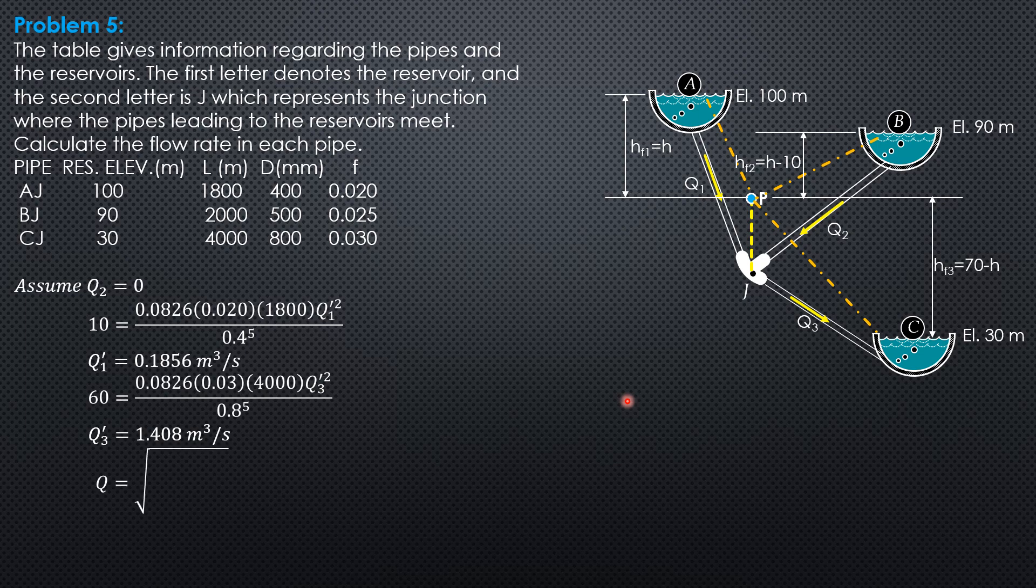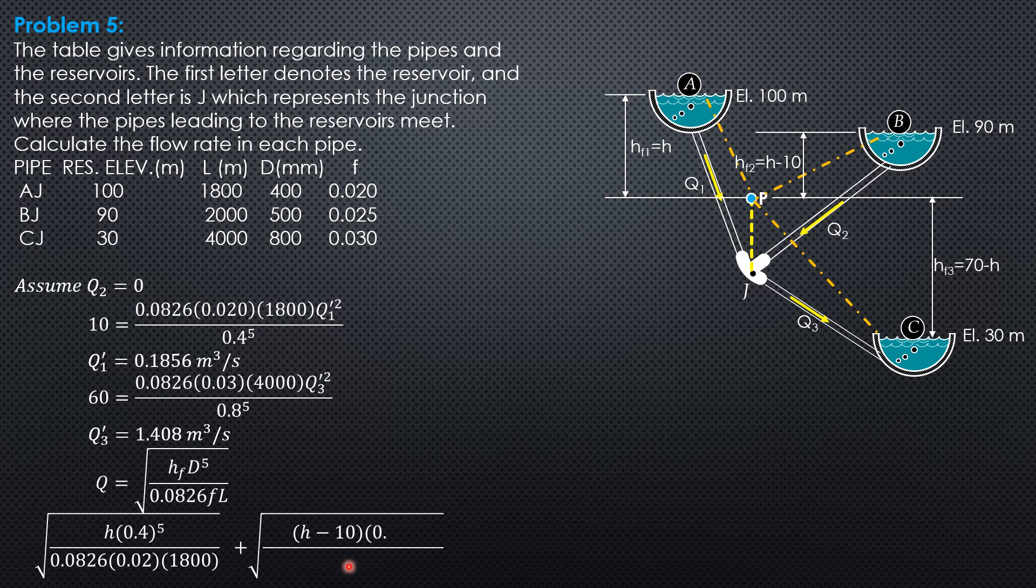So discharge formula: Q1 plus Q2 equals square root of HF, diameter to the fifth over square root of 0.0826 friction factor length. And the equation is Q1 plus Q2 equals Q3. So Q1 is square root of H times 0.4 to the fifth over 0.0826 friction factor 0.02 length 1,800, plus Q2 square root of quantity H minus 10 times diameter 0.5 to the fifth over 0.0826, 0.025, length is 2,000.